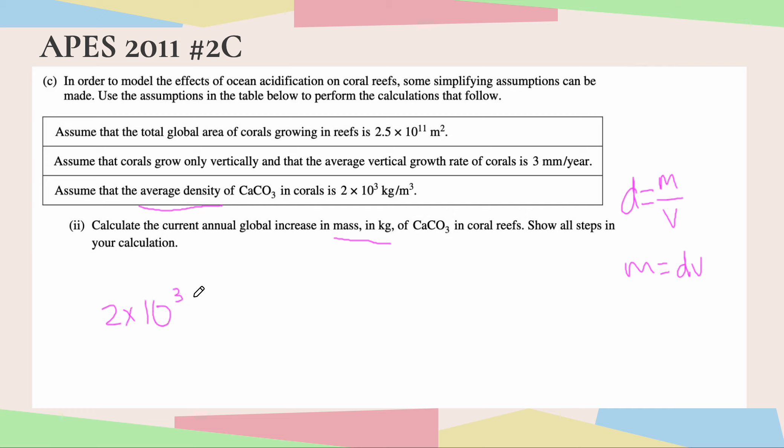We're given our density. So our density is 2 times 10 to the third kilograms per meter cubed. And then we have to think back to our answer for part one, which gave us the annual increase in volume. So that was 7.5 times 10 to the 8th meters cubed per year. So now we have multiplied our density times our volume, let's go ahead and cancel out our units to make sure we are in a good place. And then let's go ahead and multiply.